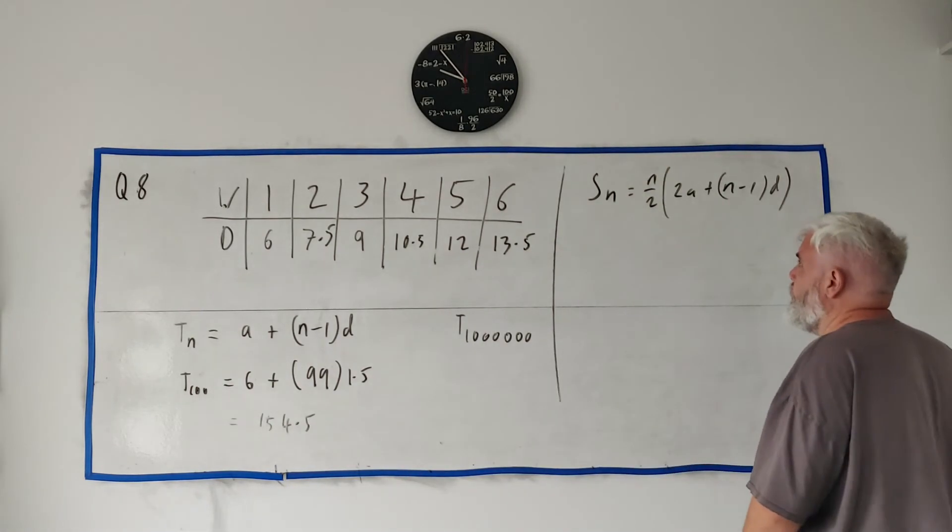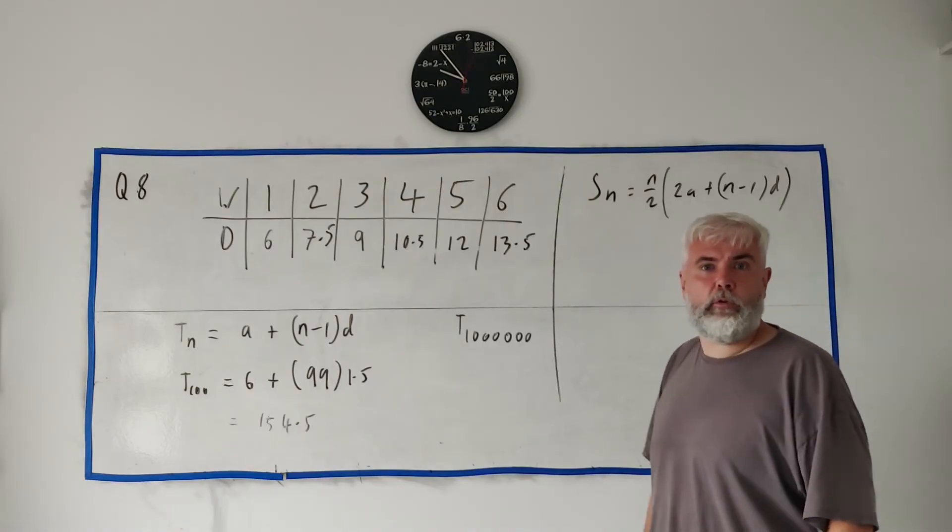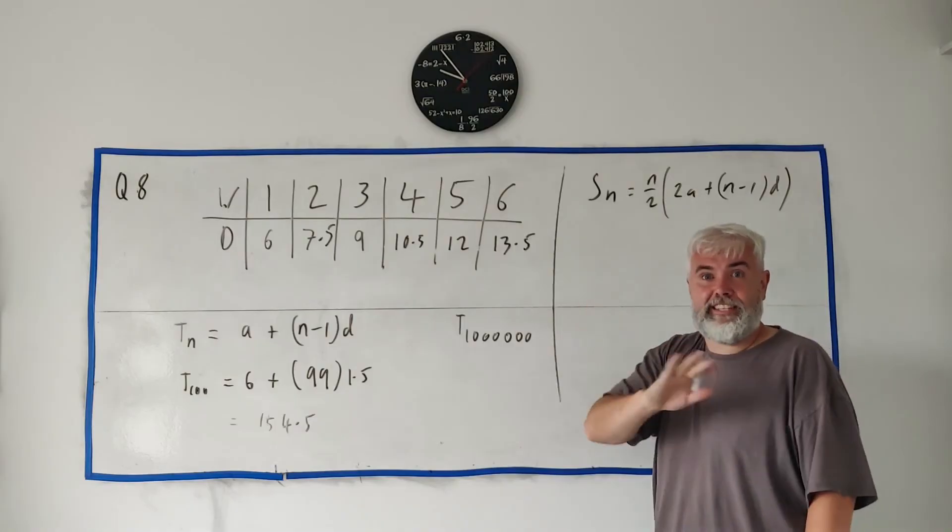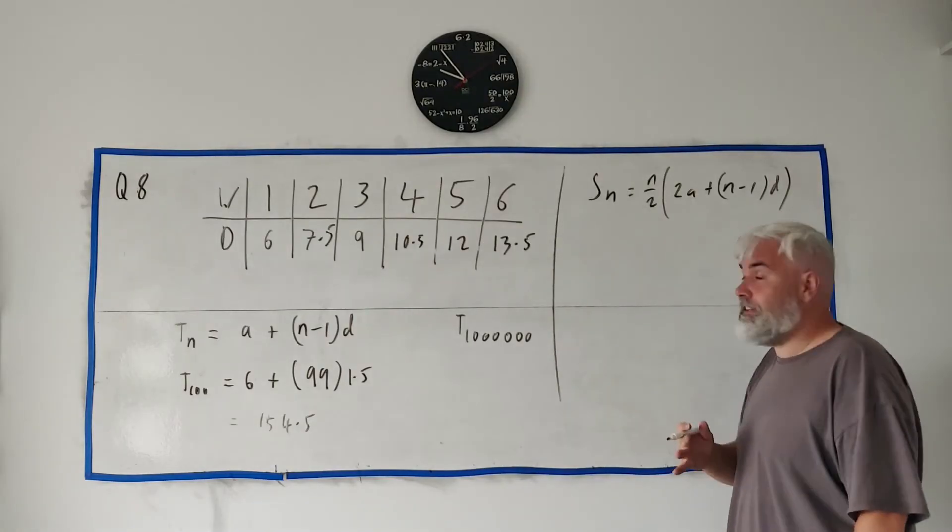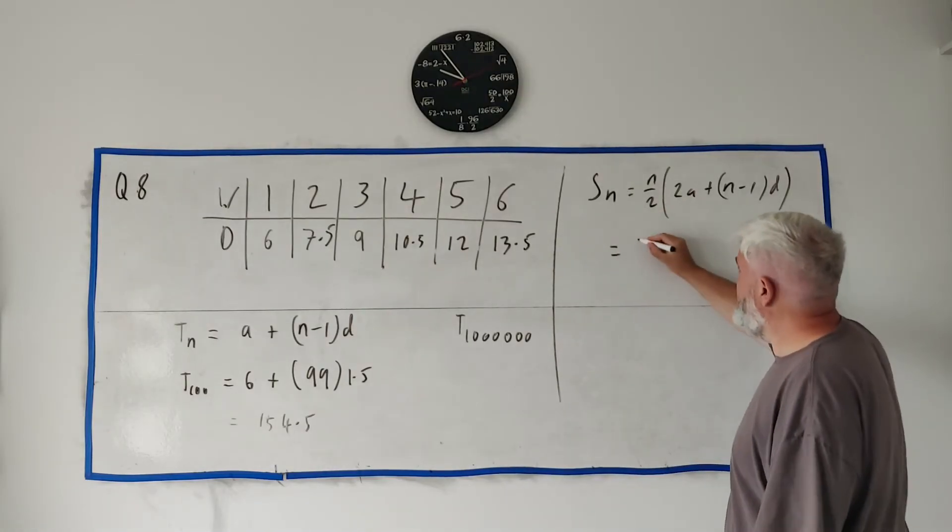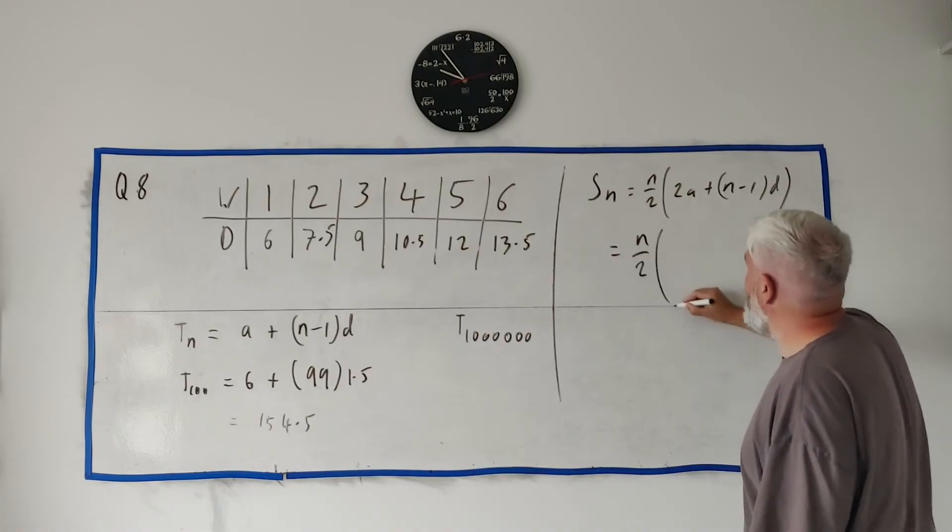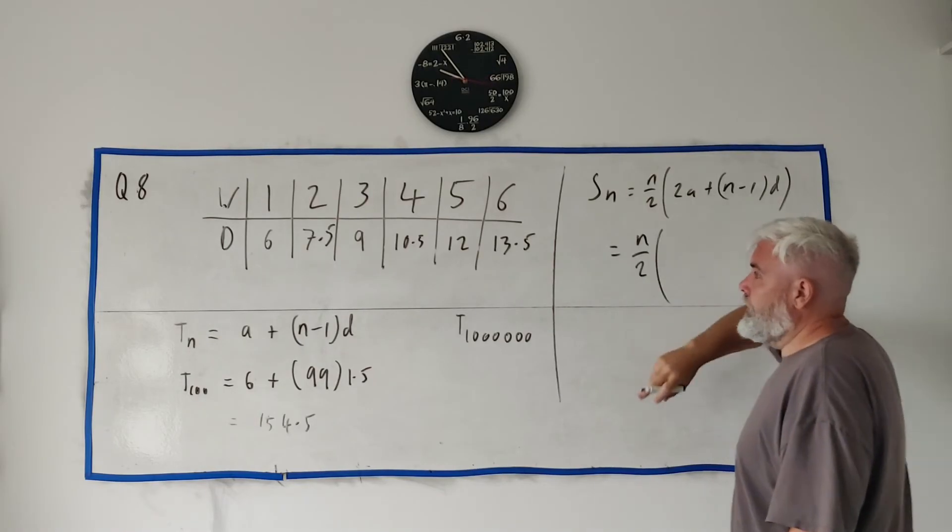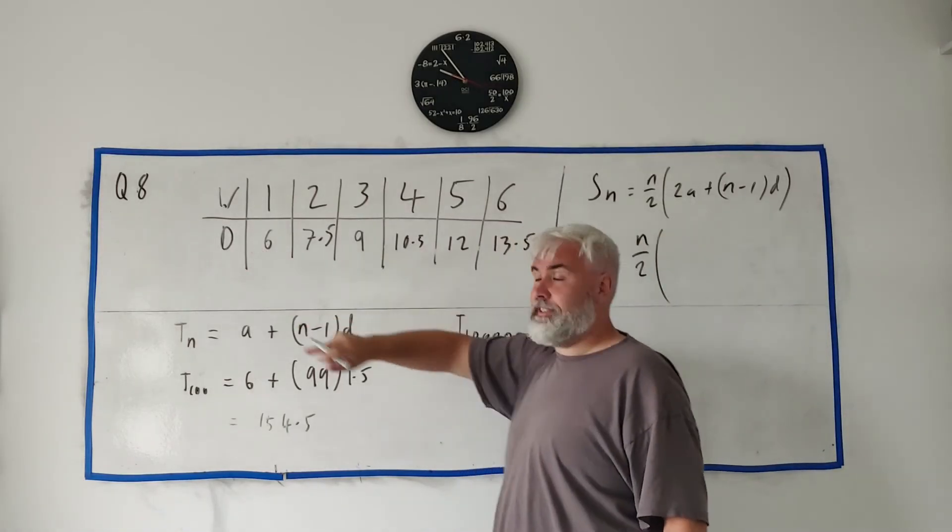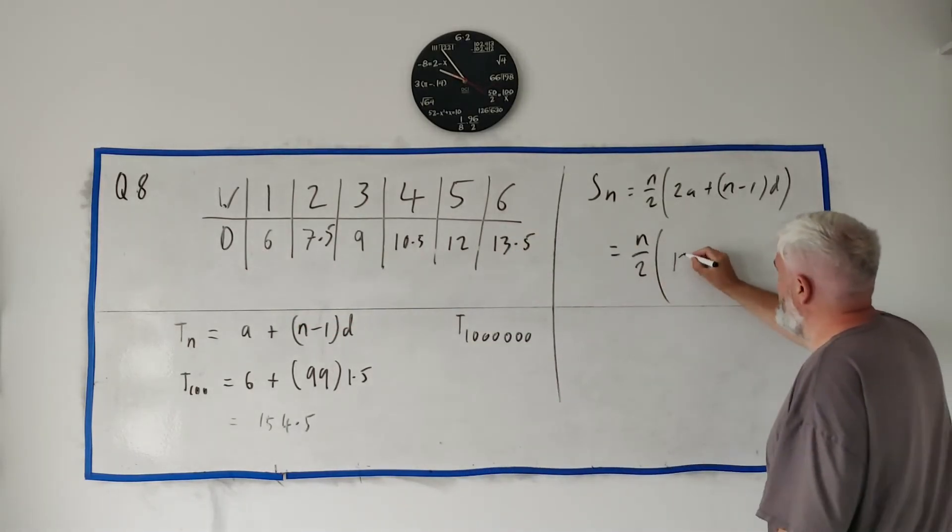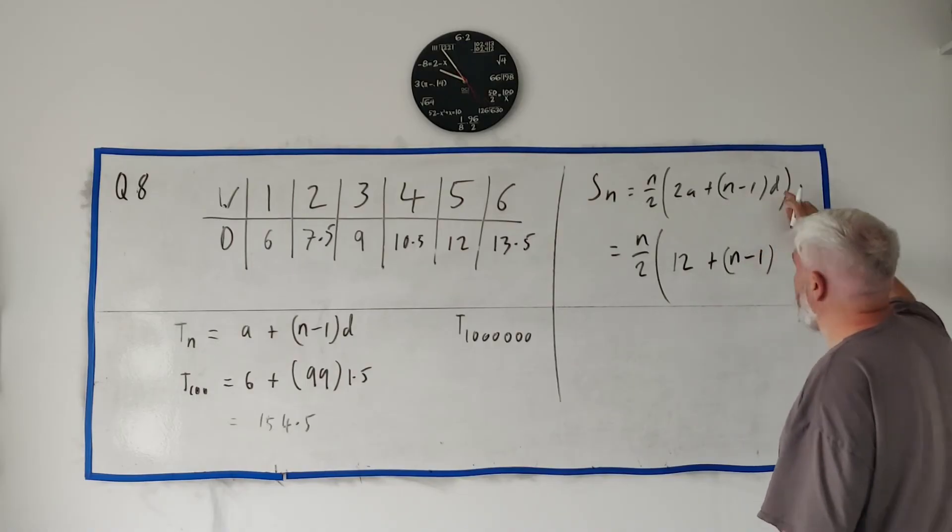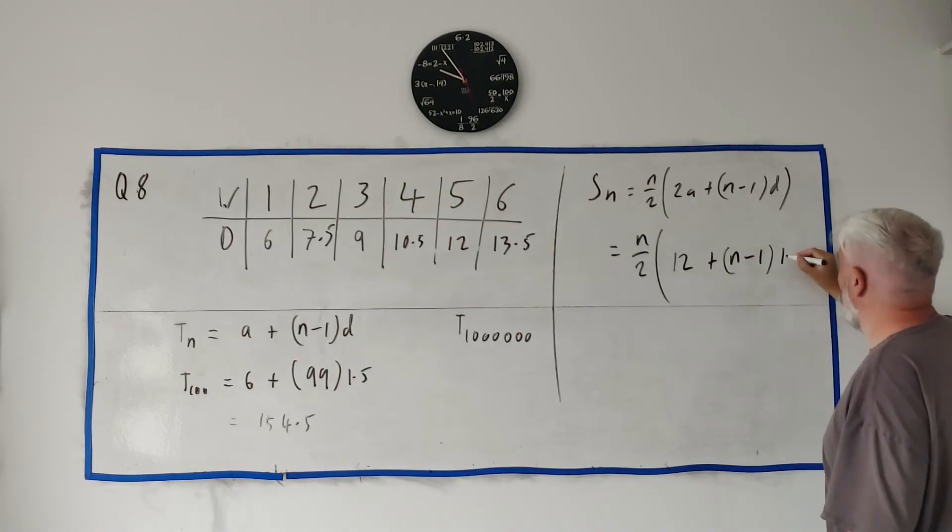Let's see what do we have here. They wanted s_n, so they're happy for n to stay as n, 'in terms of n' they say, so you can leave n alone. n just continues to be n. a, though, they want you to replace: a they want you to point out is 6, so two 6s are 12. Plus, again, n can stay as it is. They want you to replace d: d is 1.5.